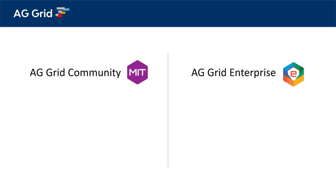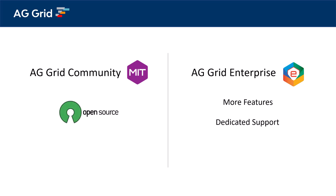The products differ in that AG Grid Enterprise comes with more features and dedicated support. AG Grid Community is open source and comes with an MIT license. This means you do not need to buy any license to use AG Grid Community, and this includes using AG Grid Community in production.